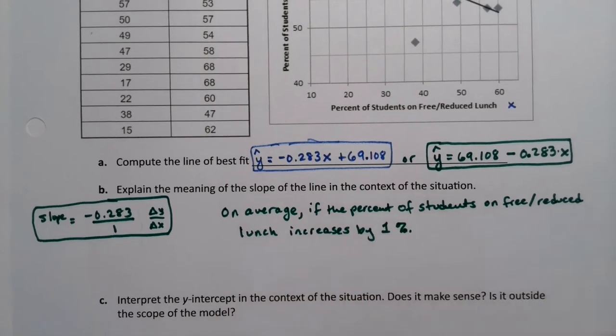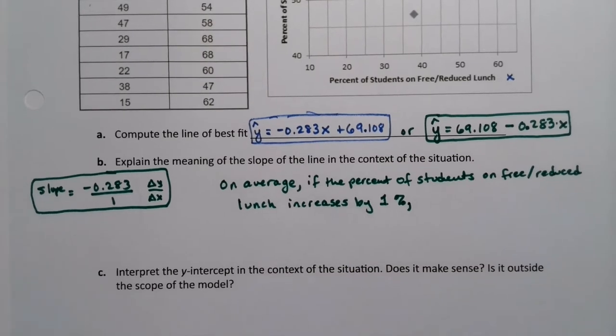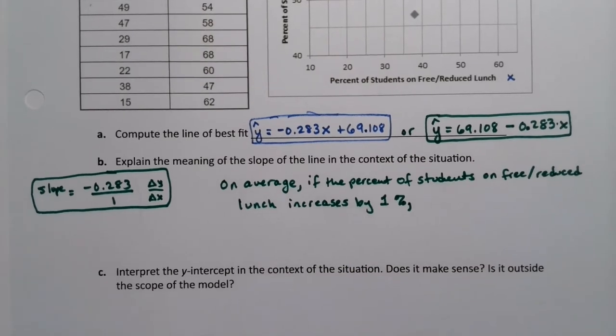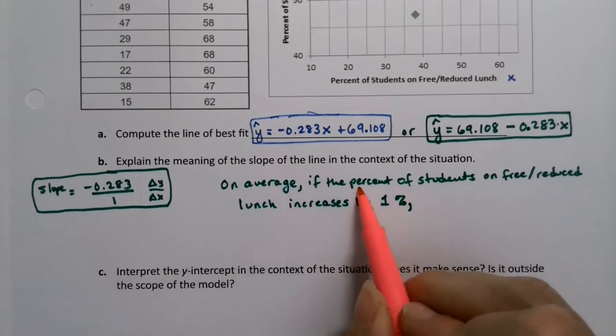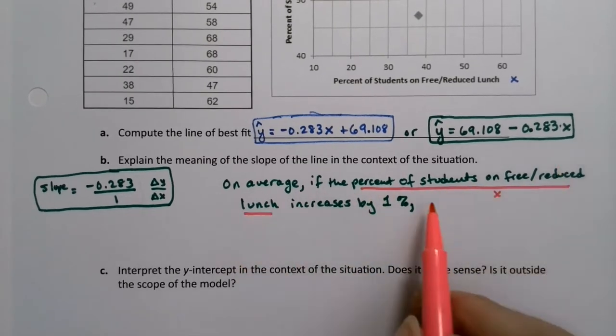So if the percent of students on free-reduced lunch increases by 1. I always like to throw in that percent, because it's just reiterating, because the percent is sort of acting like my unit here. That's what I'm going to say about that. So this is all explaining the x. If x increases by 1, then we would expect the y,